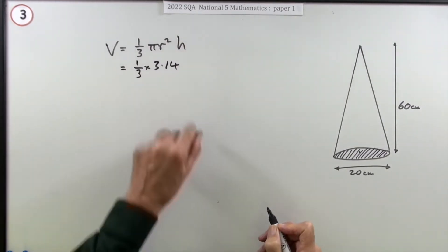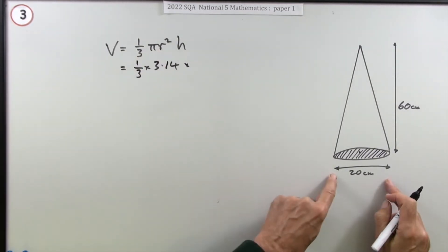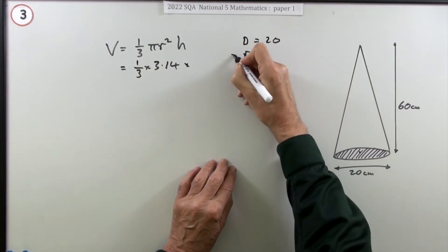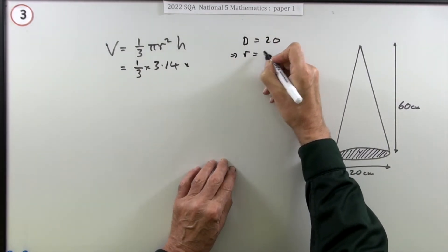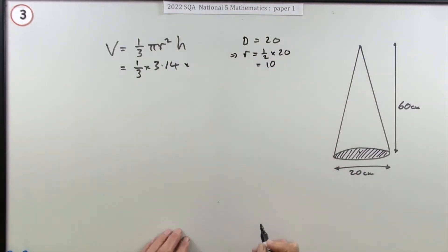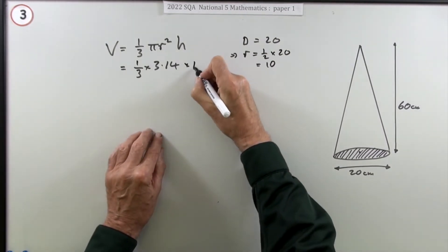The question told you to use 3.14 for pi. Now r stands for radius - that's not the radius, that's the diameter. If the diameter is 20, the radius is going to be a half of the 20, which is 10. I'll put the units in at the end.